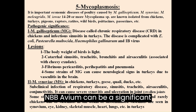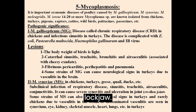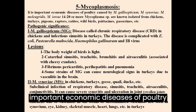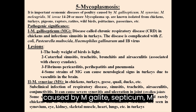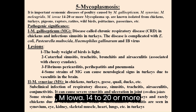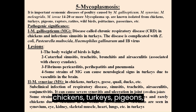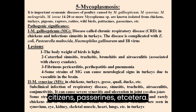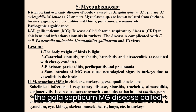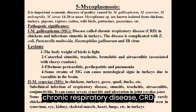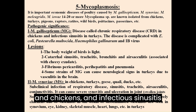Note: B. avium can be a significant pathogen in young broilers. Mycoplasmosis is an important economic disease of poultry caused by M. gallisepticum, M. synoviae, M. meleagridis and M. iowae. 14-20 or more Mycoplasma sp. are known to be isolated from chickens, turkeys, pigeons, raptors, ratites, wild birds, psittacines and passerines. M. gallisepticum (MG) causes Chronic Respiratory Disease (CRD) in chickens and infectious sinusitis in turkeys.